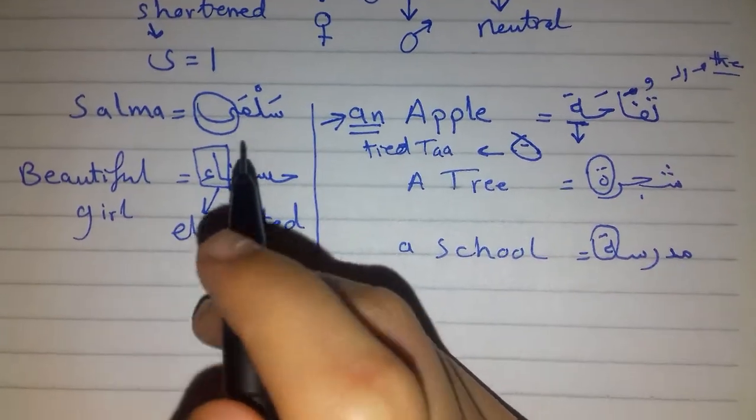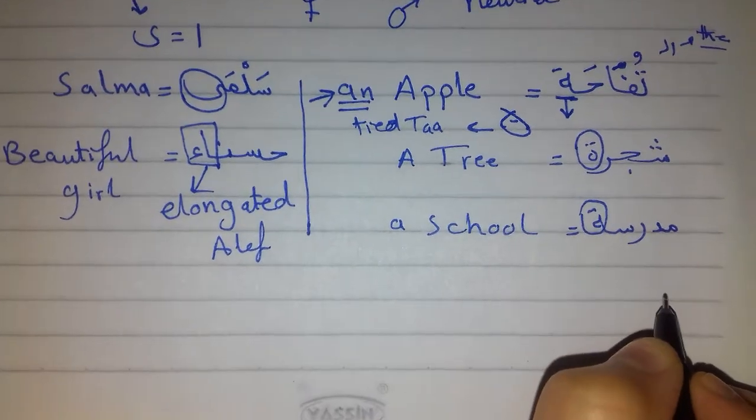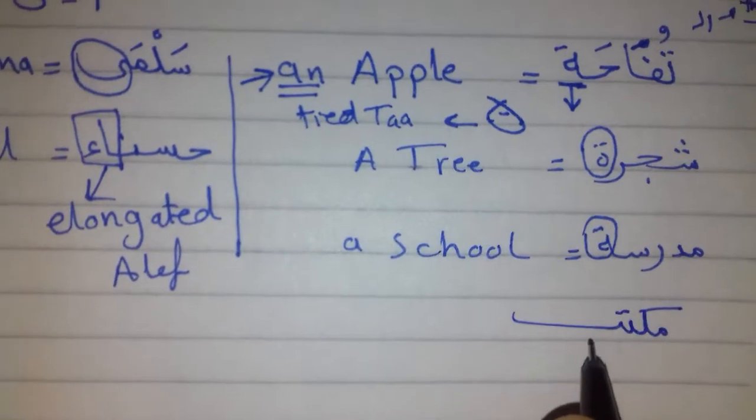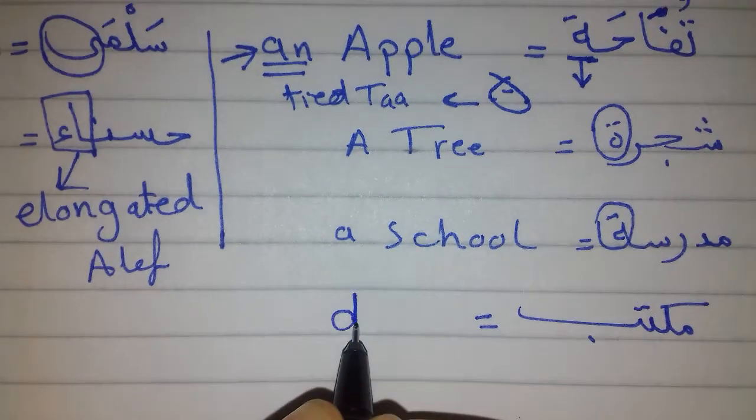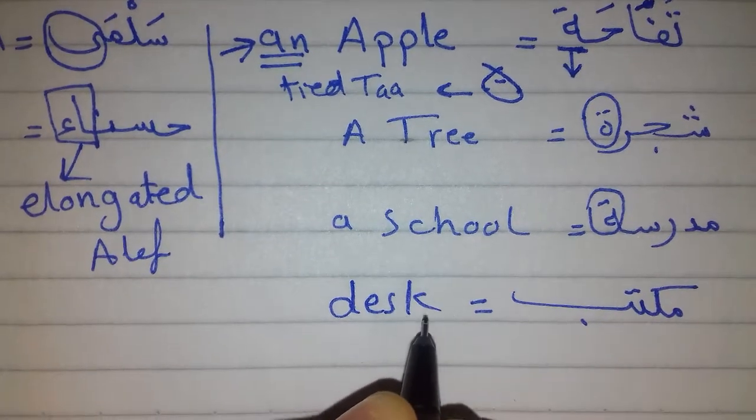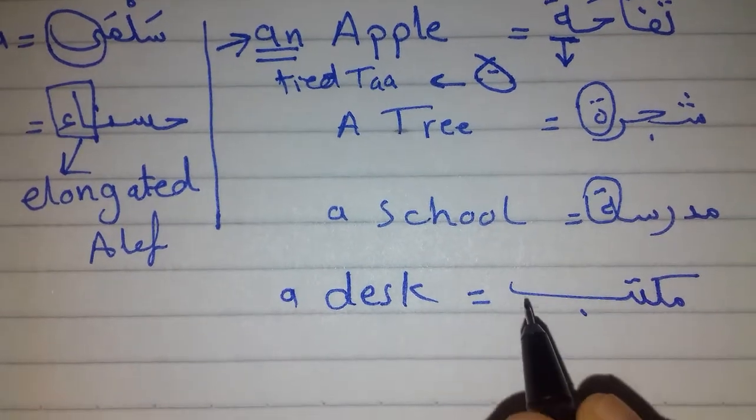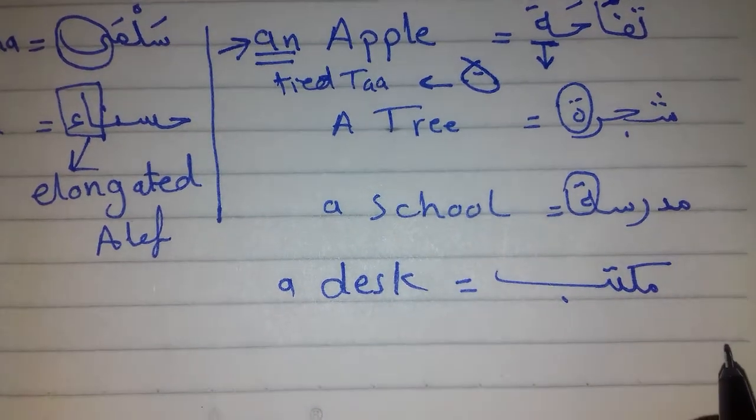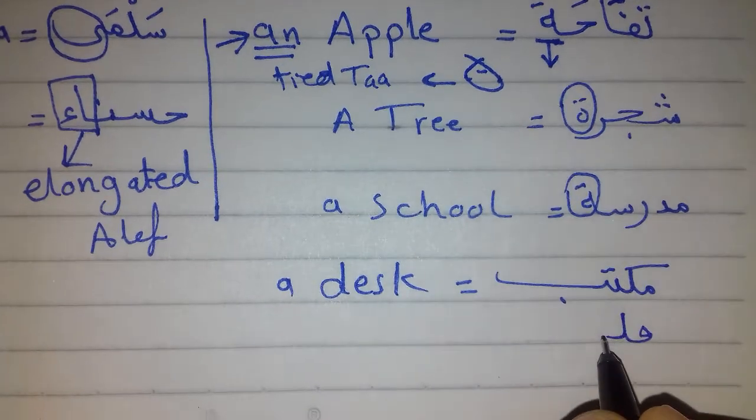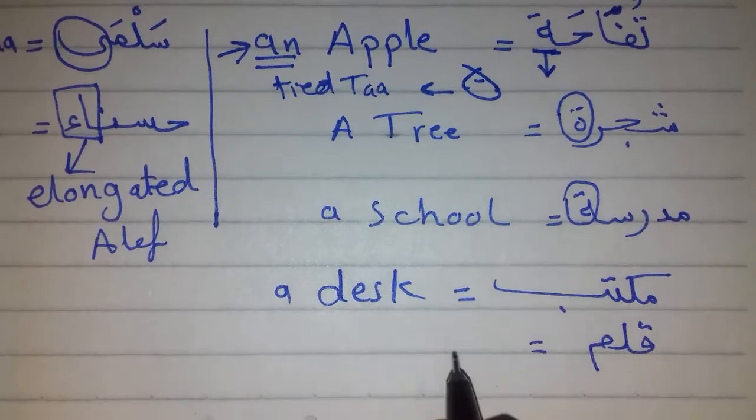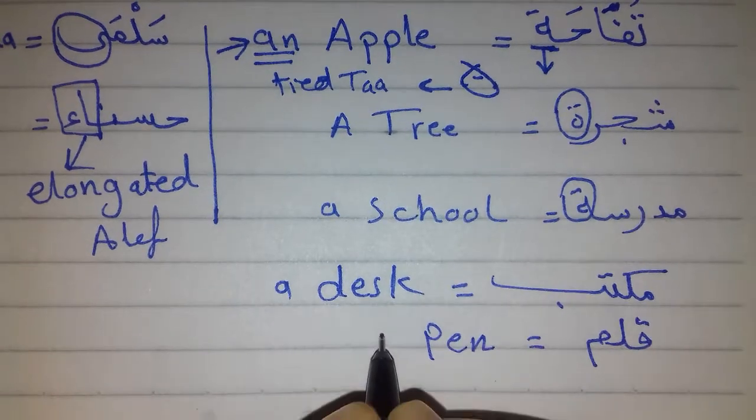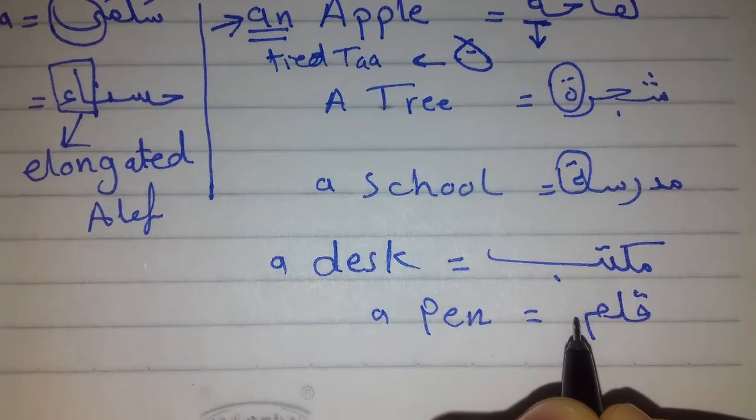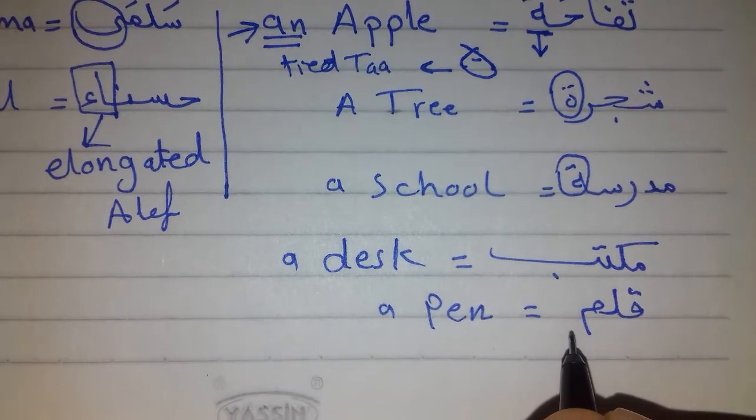Let's give you some examples of masculine words. For example, here we have the word maktab. Maktab means desk, or a desk. And as you see, there is no ta, there is no alif maksura, there is no alif mamdooda. So it's masculine.